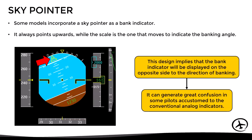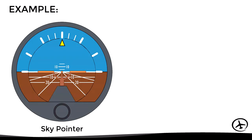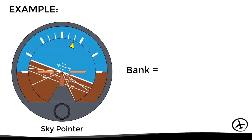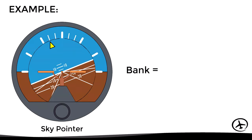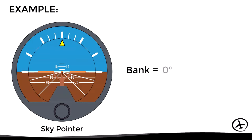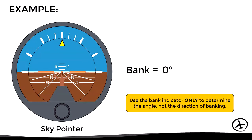Let's see in more detail how a sky pointer works. With zero bank, the sky pointer indicates 0 degrees. If the aircraft banks to the left, the miniature aircraft shows the left bank correctly, but the bank indicator appears on the right side of the scale. The opposite happens when banking to the right — the miniature aircraft shows the right bank correctly, but the indicator moves to the left. The key to avoiding confusion is to use the bank indicator only for the angle and the miniature aircraft to determine the direction of bank.